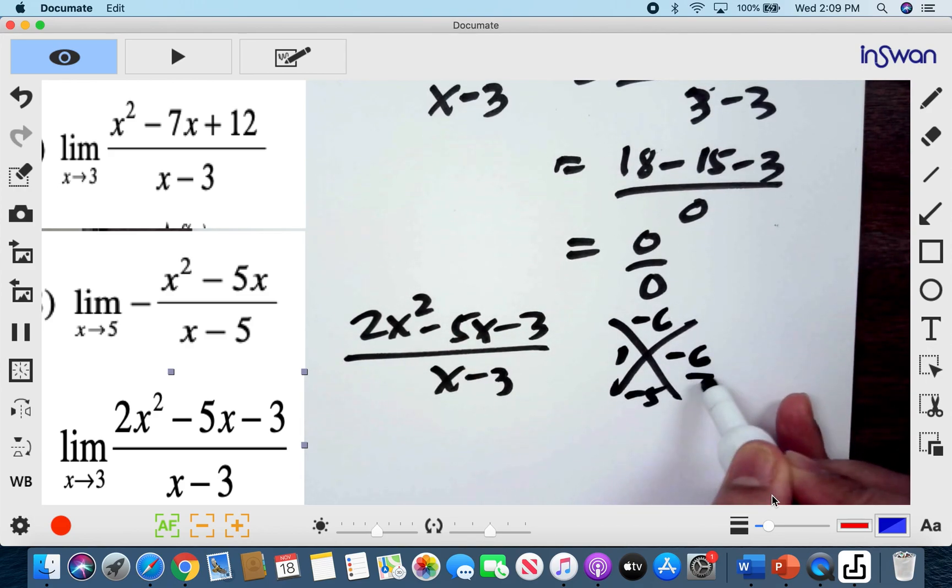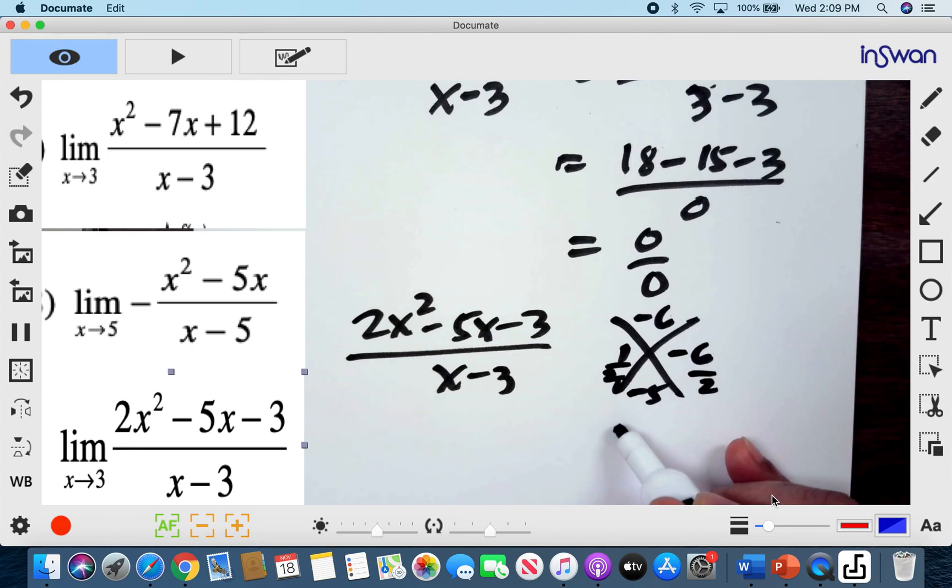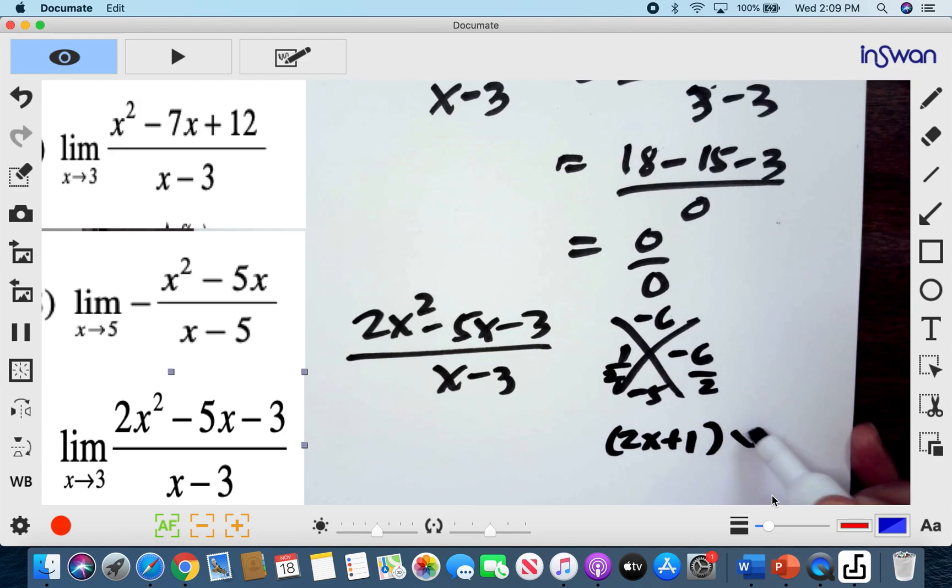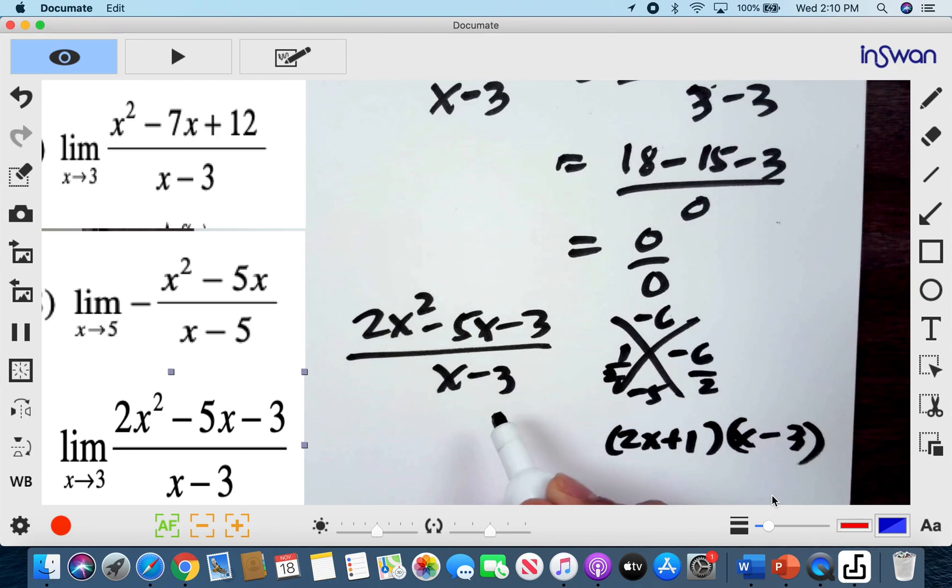But of course we still need to divide by 2 because that's the rule. And so therefore our factors are 2x plus 1. Your 2 will be in the front of x. And then x minus 3. Most often than not, you can cancel the denominator.